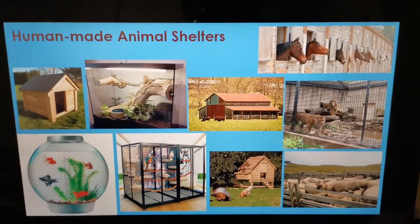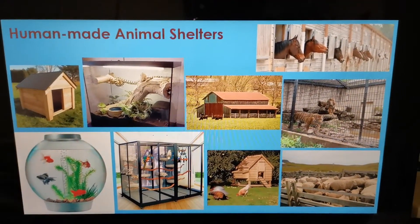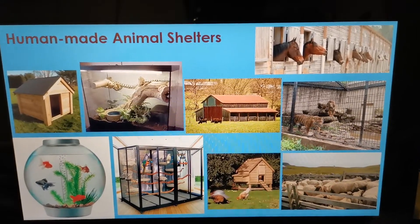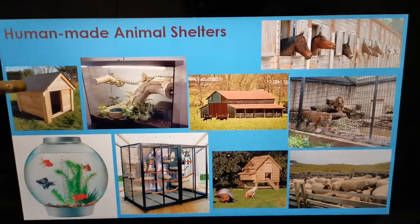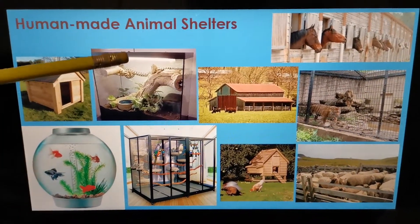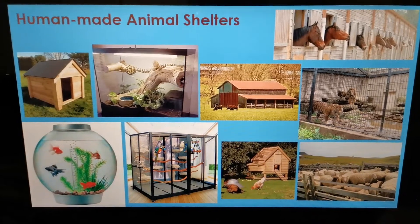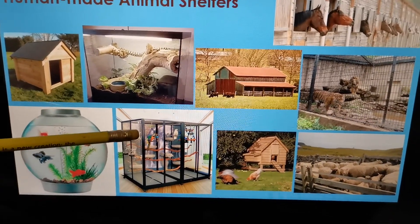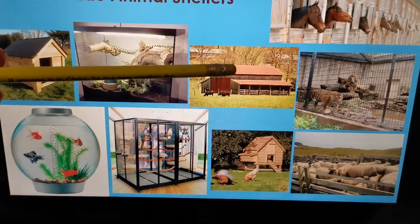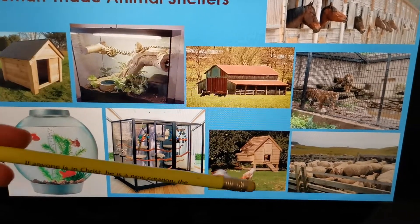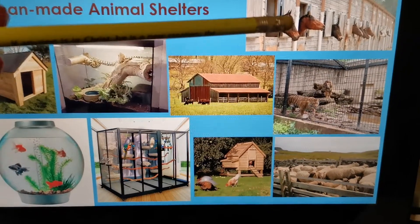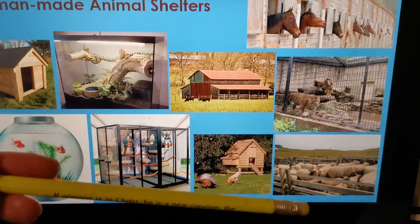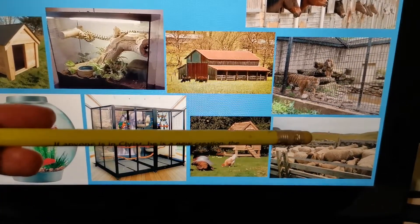Over here we've got Human-Made Animal Shelters — shelters made by humans. So here we've got a dog kennel, a terrarium for a snake, a fishbowl for a fish, a bird's nest, a barn, a chicken coop, a stable for a horse, a zoo cage, and a sheep's pen.